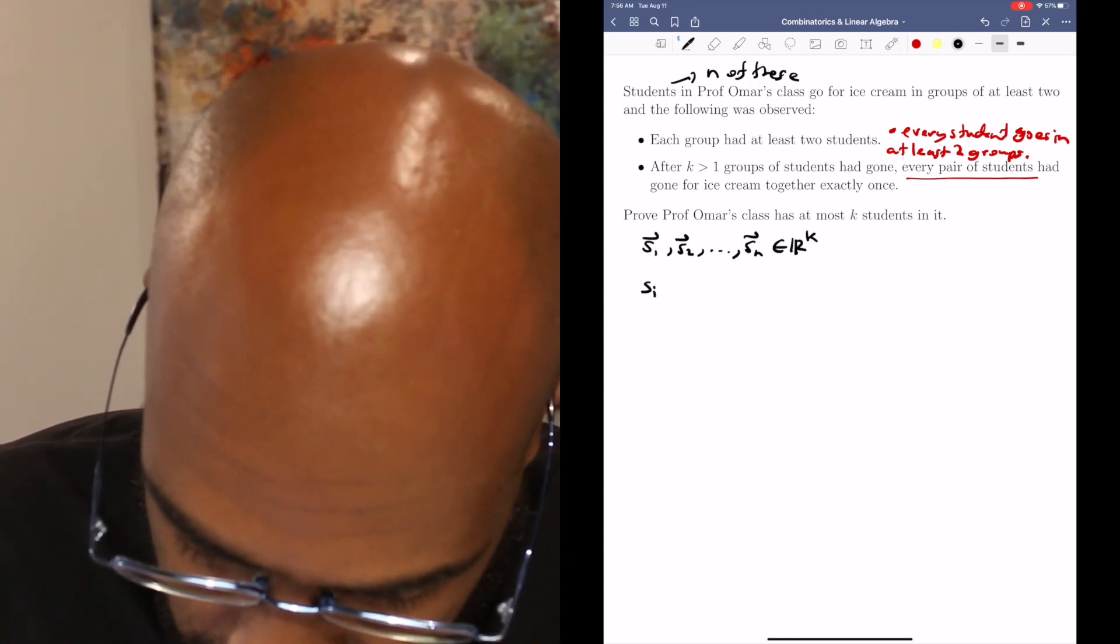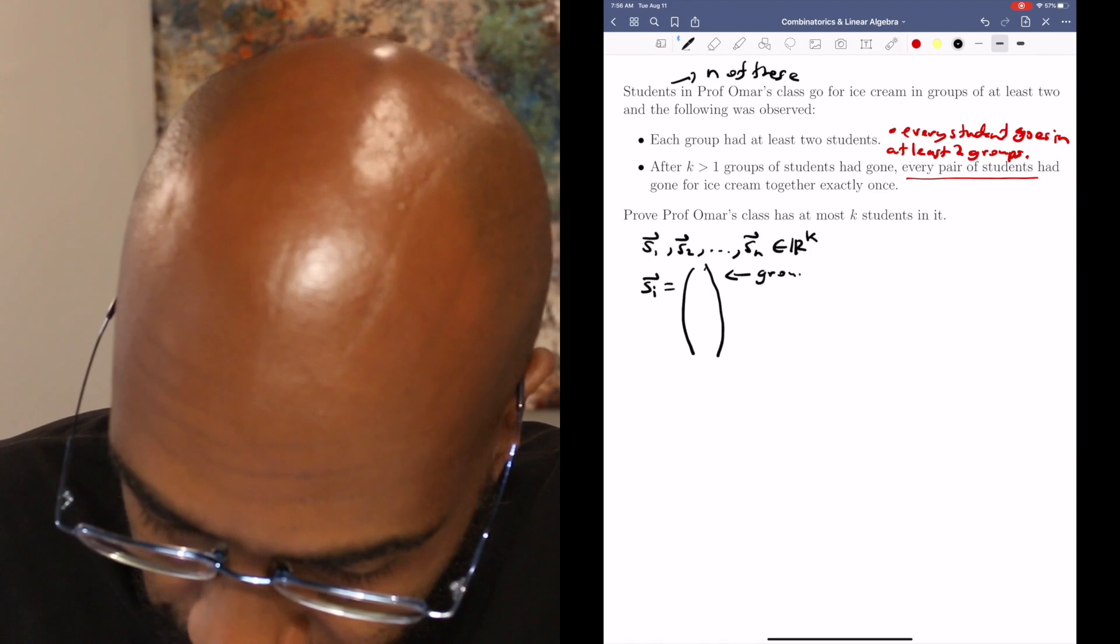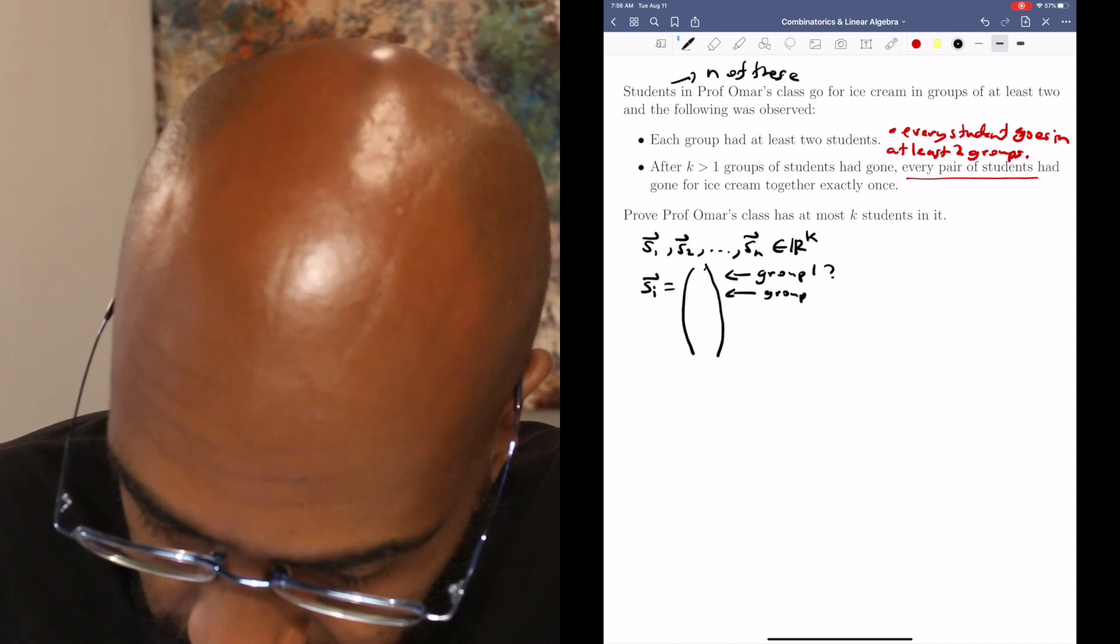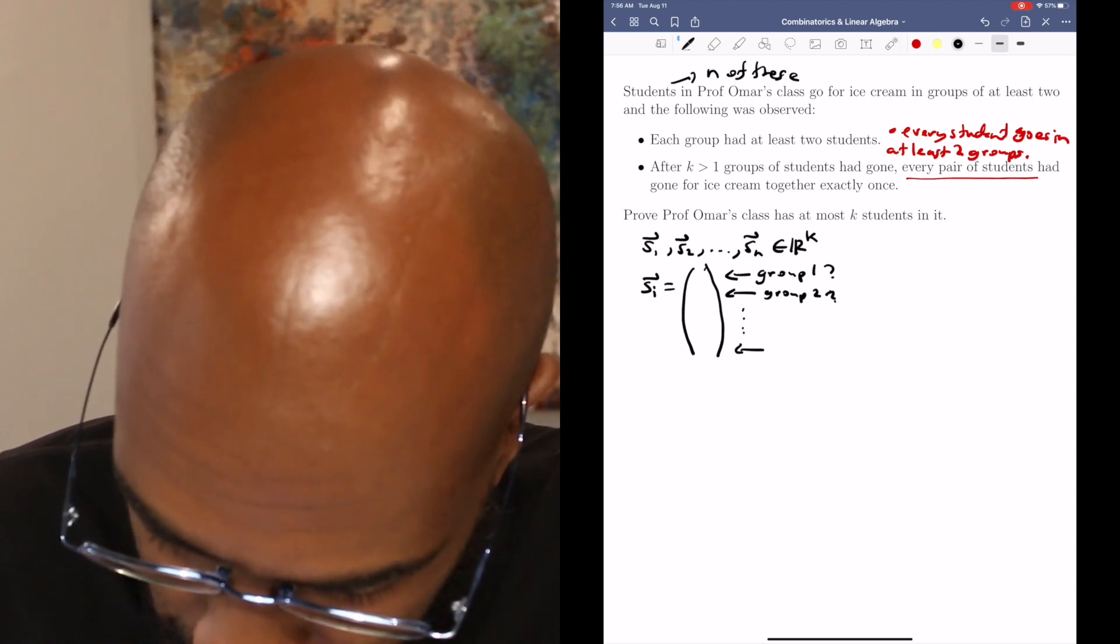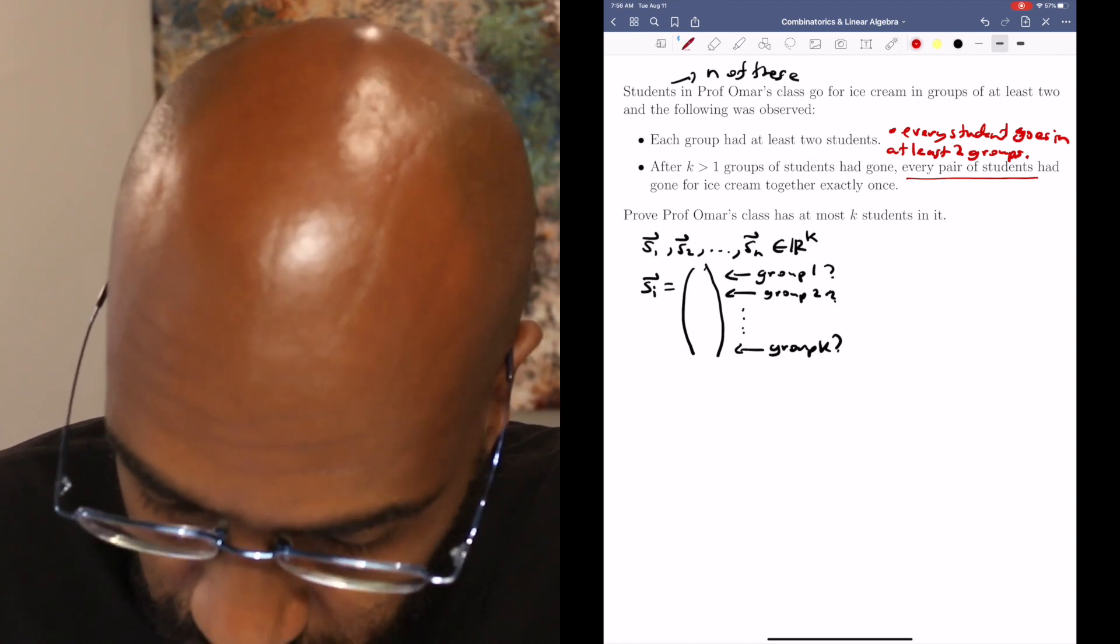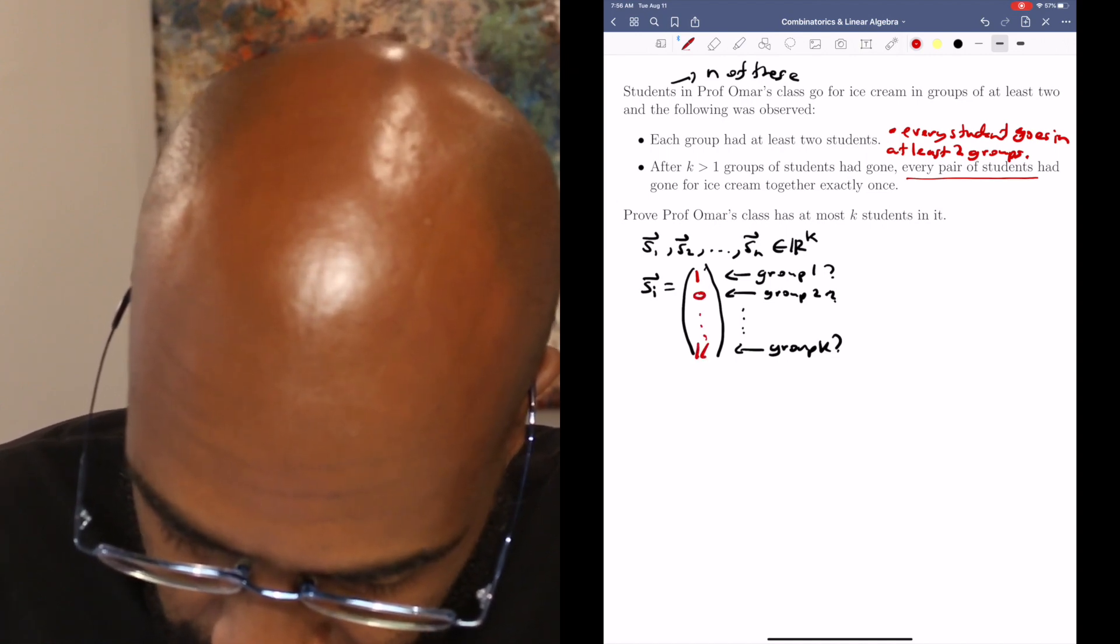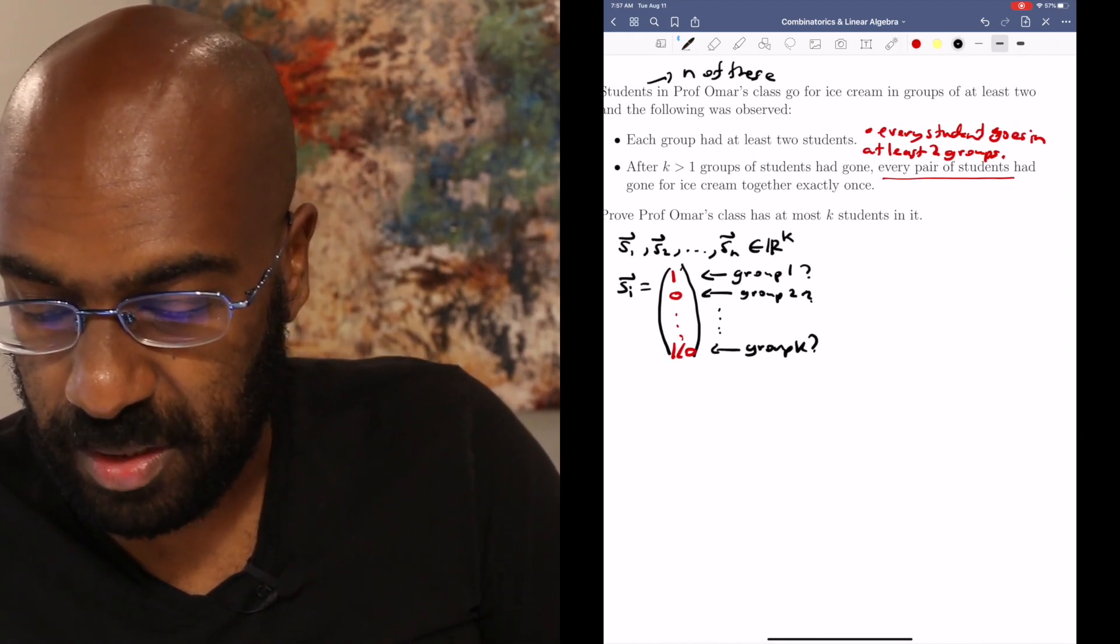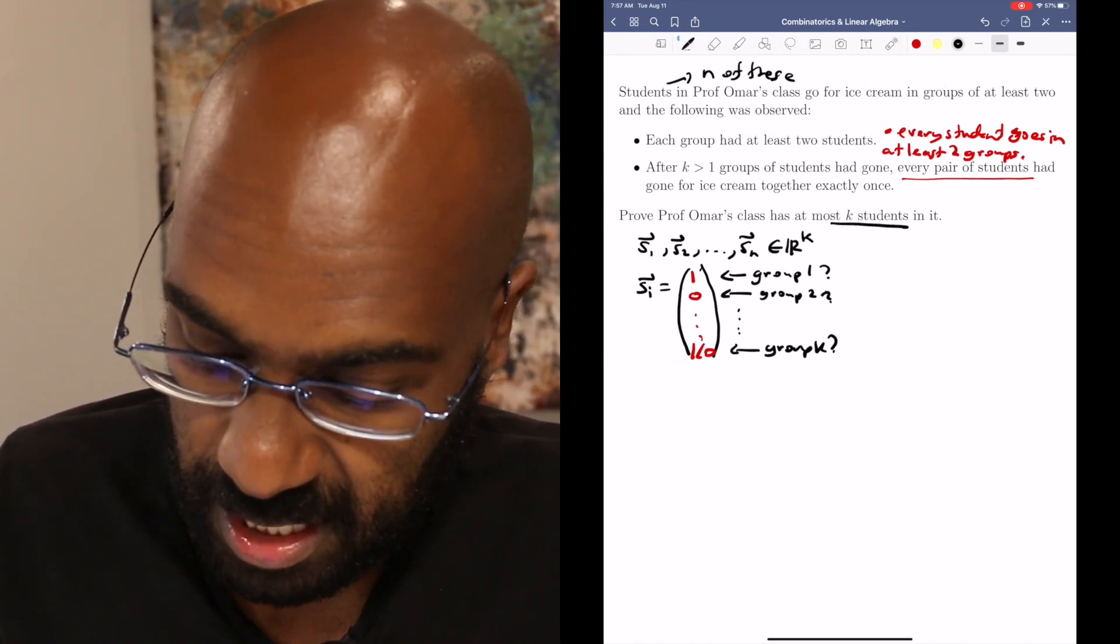Now what are these vectors going to look like? The ith vector is going to be a vector that consists of zeros and ones that tells you whether or not the student was involved on the trip in the jth group, where j is the corresponding row. So for example, if student i went on group one, we'd have a one here. Not in group two, we'd have a zero, etc. And each of these entries will be a zero or a one. Okay, so let's make some observations about these individual vectors before we go about actually using linear algebra to show that there are most k students.